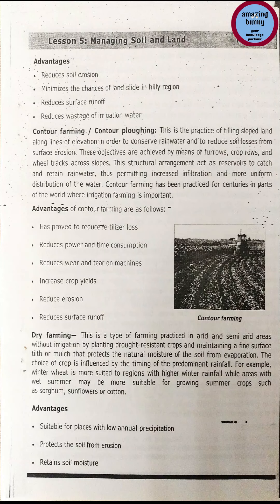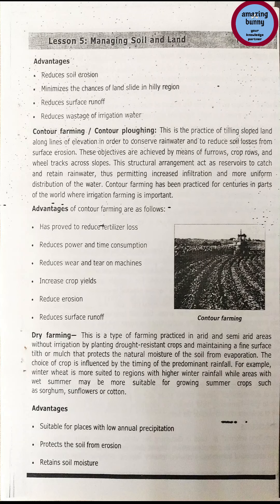Method 2 — Contour farming: the practice of tilling sloped land along lines of elevation to conserve rain water and reduce soil losses from surface erosion. This is achieved by means of furrows, crop rows and wheel tracks across slopes, which act as reservoirs to catch and retain rain water, permitting increased infiltration and more uniform distribution of water. Advantages include reduced fertilizer loss, reduced power and time consumption, less wear and tear on machines, increased crop yield, reduced erosion and reduced surface runoff.